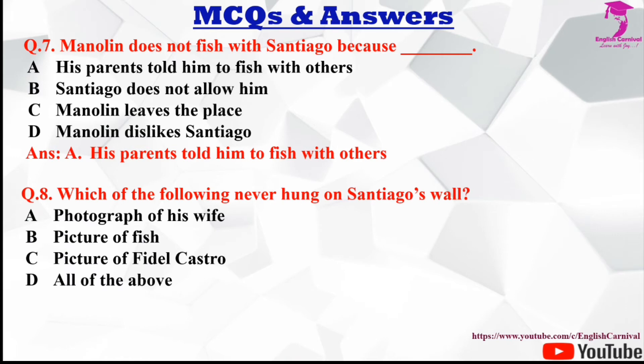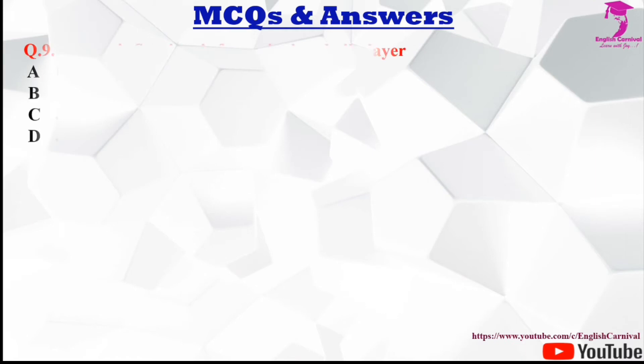Question number eight: Which of the following is hung on Santiago's wall? Options are A photograph of his wife, B picture of a fish, C picture of Fidel Castro, and D all of the above. The correct answer is C, picture of Fidel Castro.